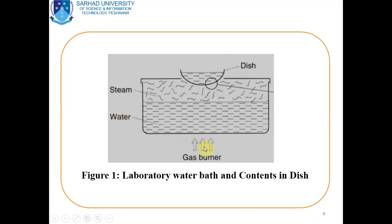Heat is provided by the gas burner or any other heating source. Water will be converted into steam after the boiling point is reached. The steam coincides with that particular part of the dish and has to pass through the dish wall, crossing this barrier, and then the content of the dish will be warmed up, heated, and melted.